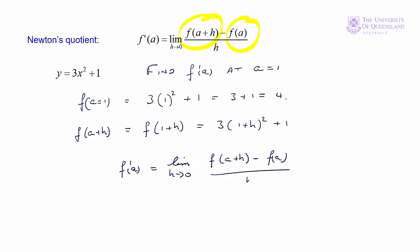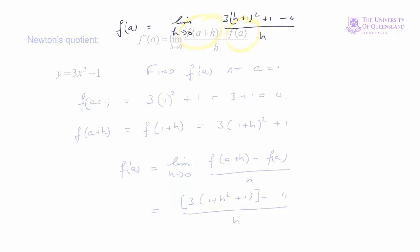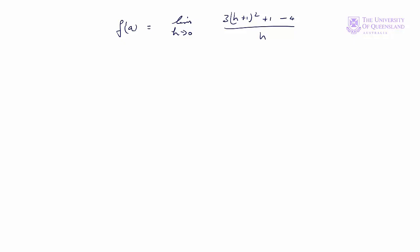That will be 3 times (1 plus h) squared plus 1 minus 3, all over h. That's h squared plus 2h plus 1 minus 3. And next we can expand that squared term.